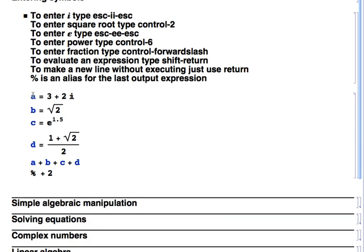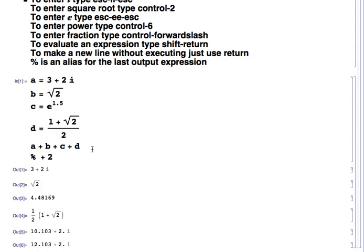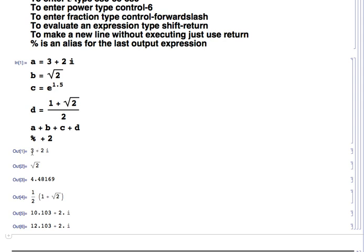Here are some simple expressions: A equals 3 plus 2i, B is the square root of 2, C is e to the 1.5, and D is a fraction. Then I sum them all up, and add 2 to the sum using the percentage alias for the previous expression. After pressing Shift+Return, it returns each value — e to the 1.5 is evaluated numerically since it's a numerical number — and that's how you enter basic expressions.